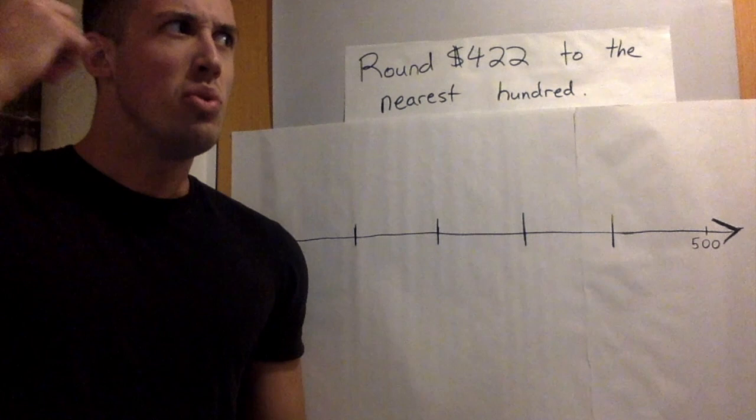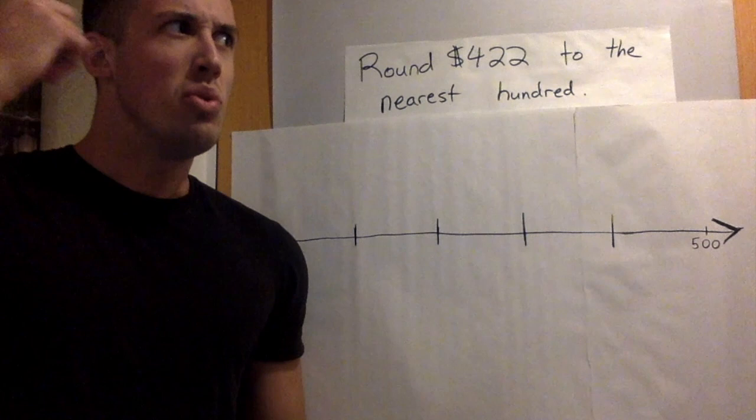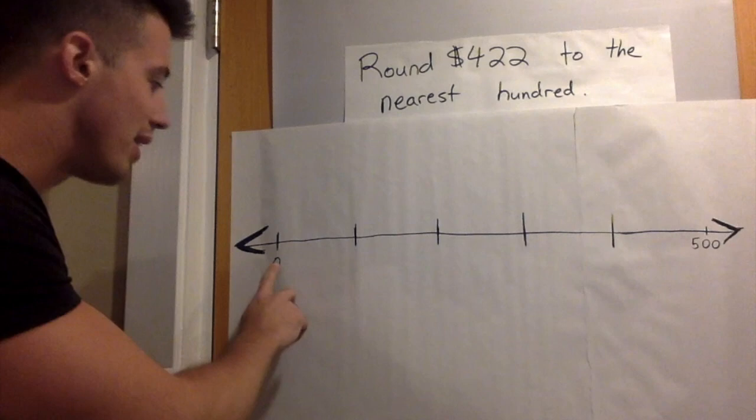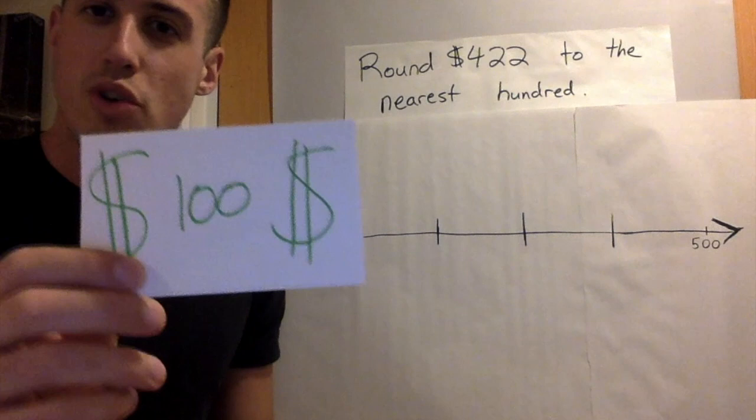I don't know how much money I need to give my mom. Maybe if I put my $100 bills on a number line it can help me see what I need to do. I have this number line here that starts at zero and goes over to 500. Let me try putting my $100 bills on the number line and see what happens.